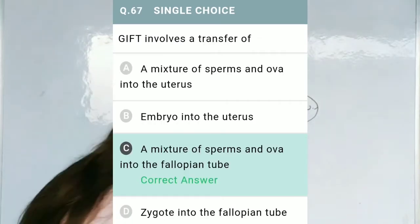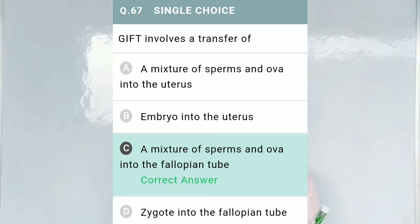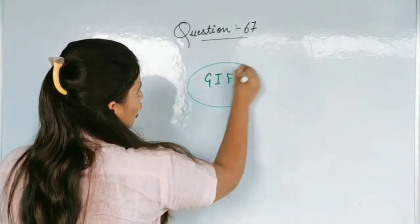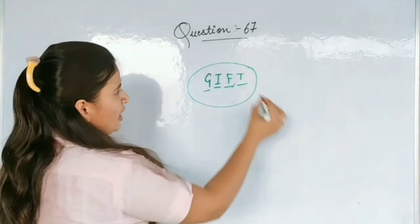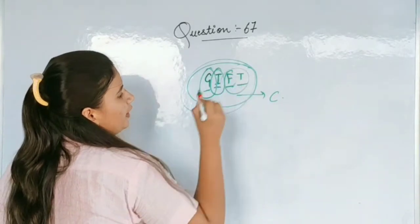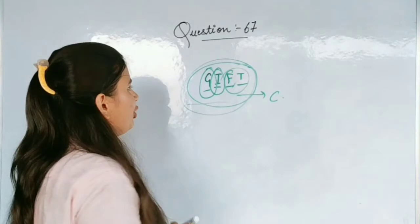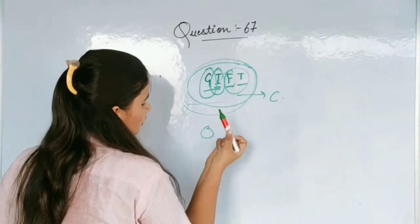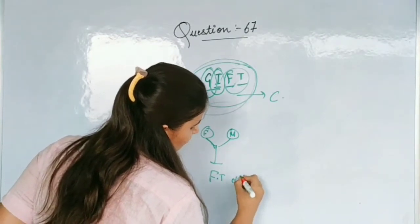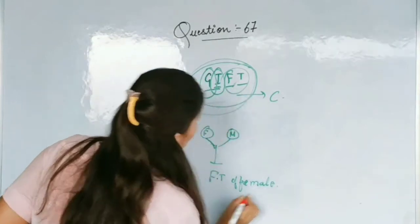Question No. 67: GIFT involves a transfer of — Option A, mixture of sperms and ova into the uterus; Option B, embryo into the uterus; Option C, a mixture of sperm and ova into the fallopian tube; and Option D, zygote into the fallopian tube. GIFT stands for Gamete Intra-Fallopian Transfer. If we know the full form, we can directly identify the answer as Option C — the gamete of the female and of a healthy male are both transported into the fallopian tube of the female.